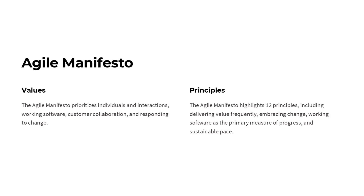The Agile Manifesto is a foundational document that outlines the core values and principles of the Agile approach to software development. The four key values are: prioritizing individuals and interactions over processes and tools; working software over comprehensive documentation; customer collaboration over contract negotiation; and responding to change over following a plan. The 12 principles highlight the importance of delivering value frequently, embracing change, focusing on working software as the primary measure of progress, and maintaining a sustainable pace. These values and principles form the basis for Agile methodologies like Scrum and Kanban, emphasizing iterative development, cross-functional collaboration, and continuous improvement.